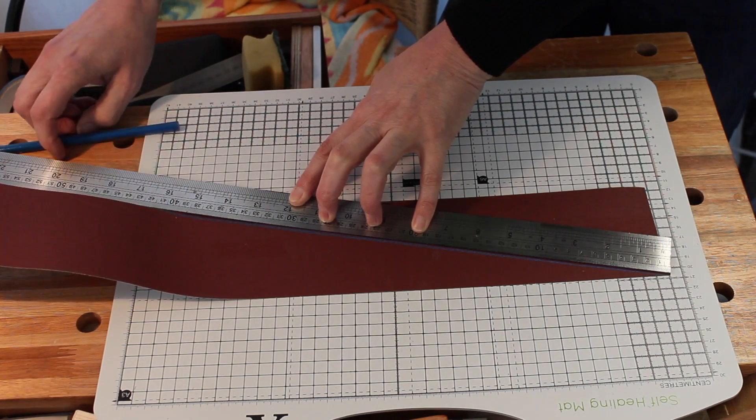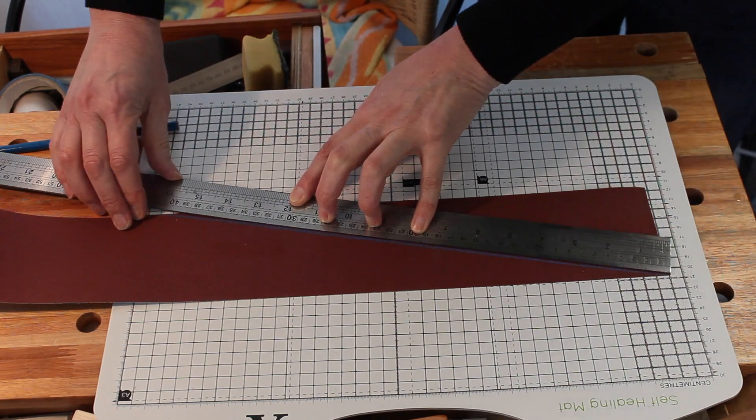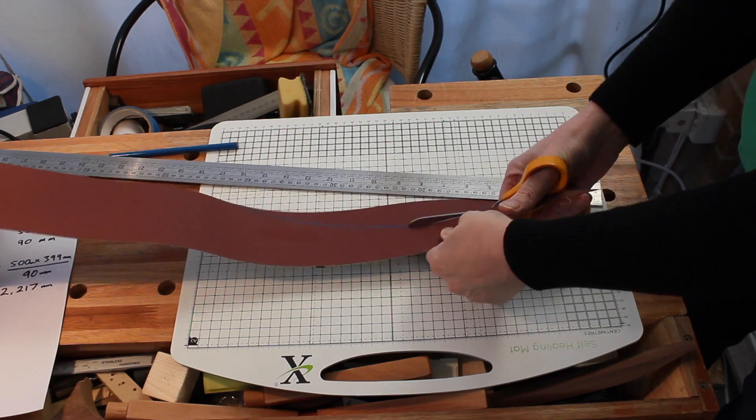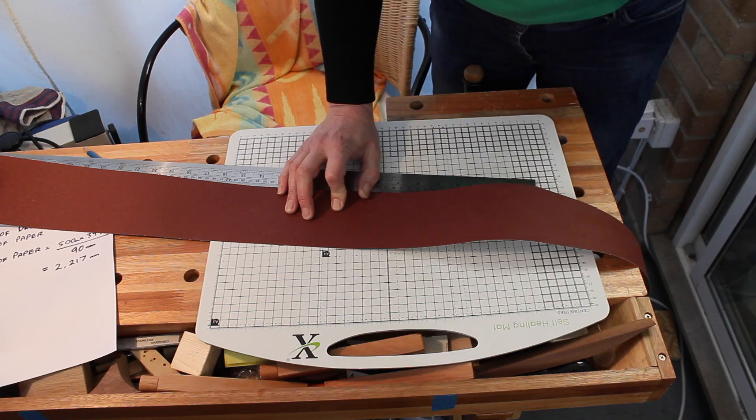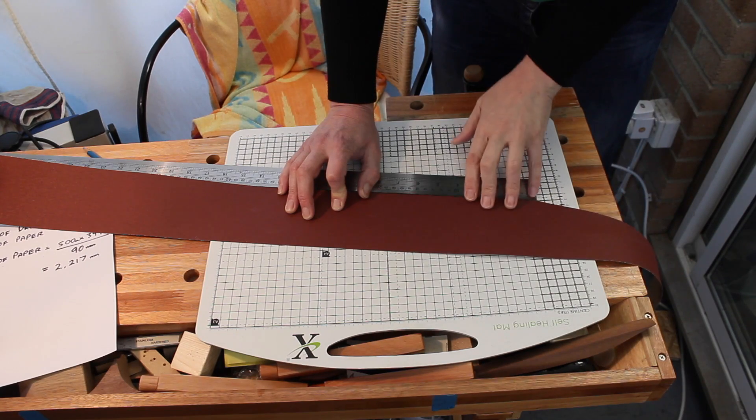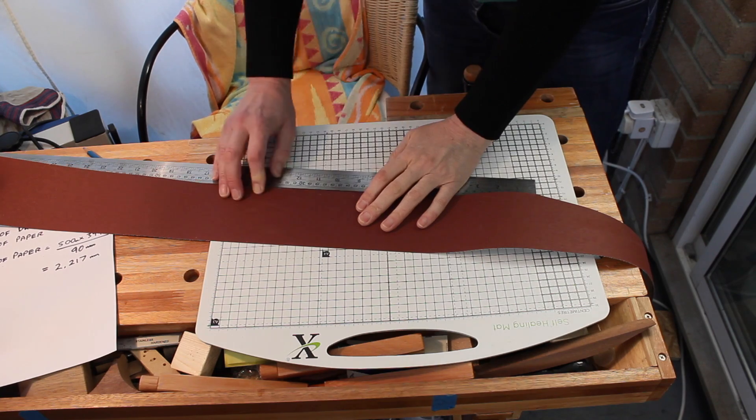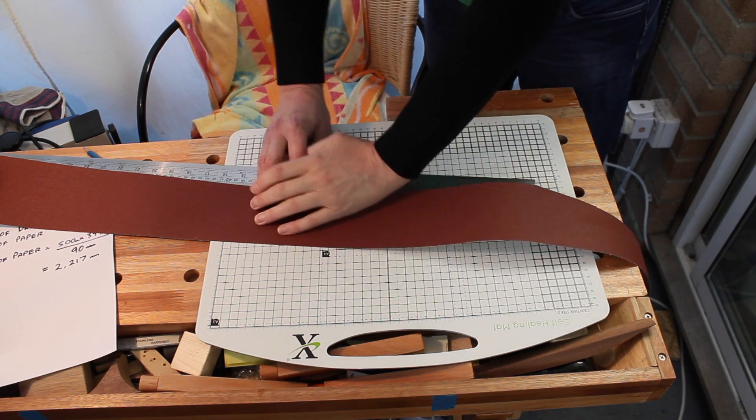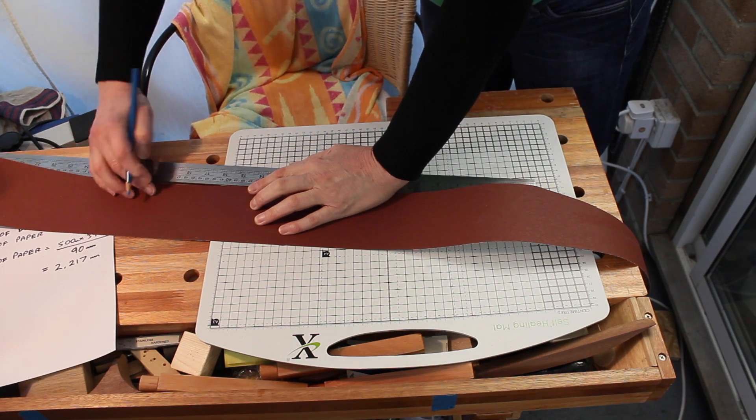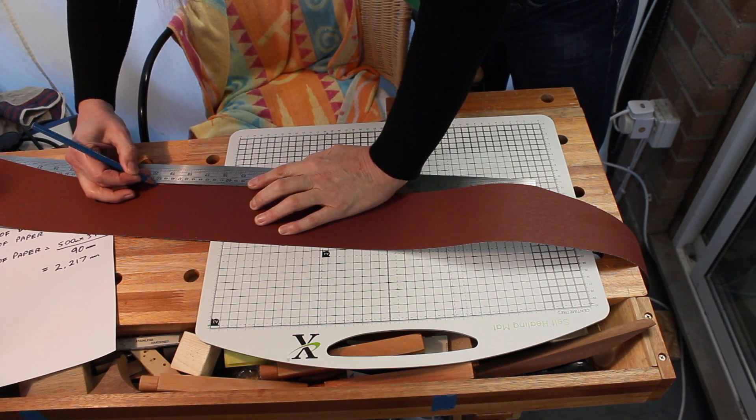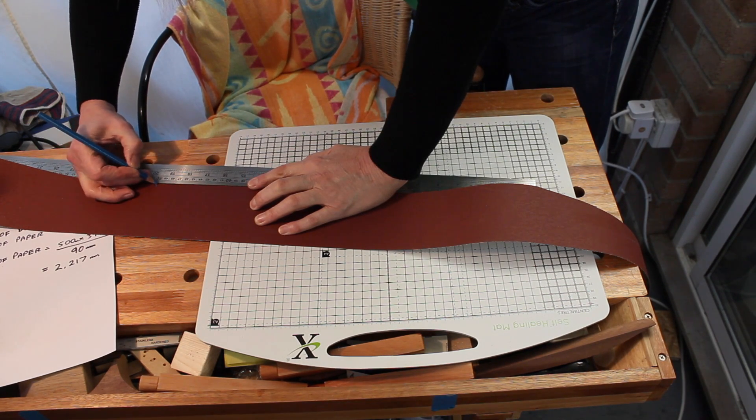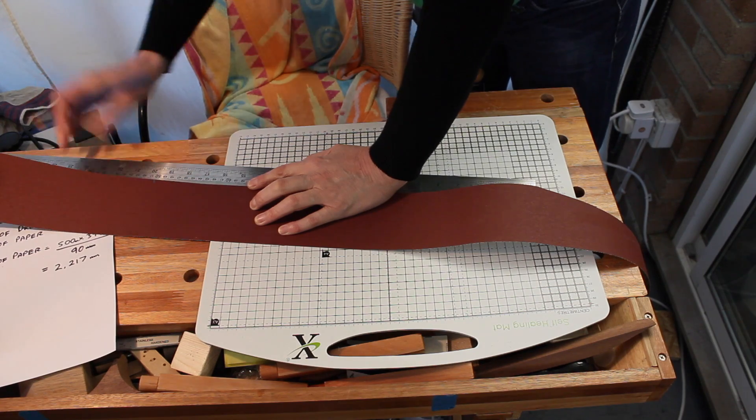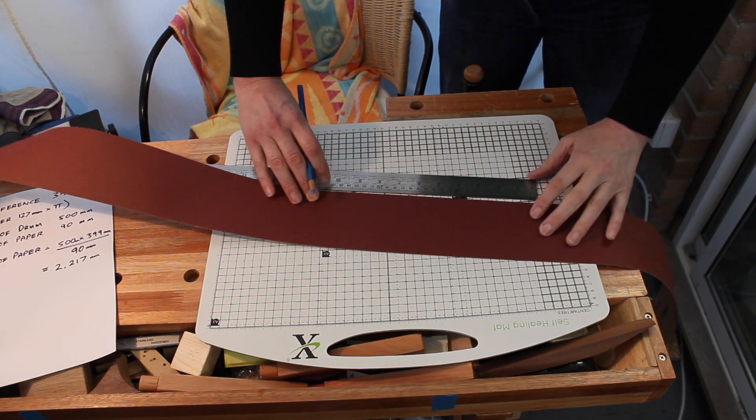So I'm just going to draw that in with a lovely blunt pencil. Great. So now we measure 2,217 from the point where the taper starts. So this is the base of our parallelogram. And because of limited space I'm just going to measure it in 50 centimeter chunks.